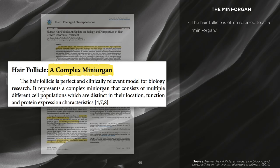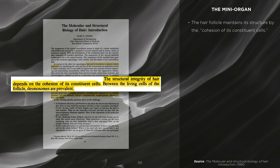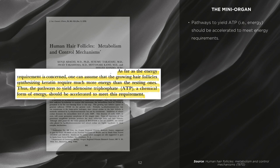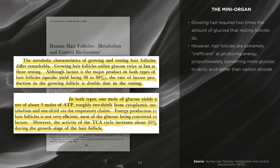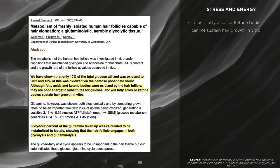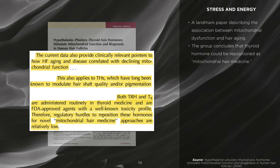The mini-organ: the hair follicle is often referred to as a mini-organ. The hair follicle maintains its structure by the cohesion of cells and requires oxygen and an energy source — e.g., glucose, fructose, or pyruvate — to grow. Pathways to yield ATP should be accelerated to meet energy requirements for hair growth. Growing hair requires two times the amount of glucose that resting follicles do. However, hair follicles are extremely inefficient at producing energy, converting proportionately more glucose to lactic acid rather than carbon dioxide. Glucose, and not fat, is the primary fuel of hair follicles. In fact, fatty acids or ketone bodies cannot sustain hair growth in vitro.